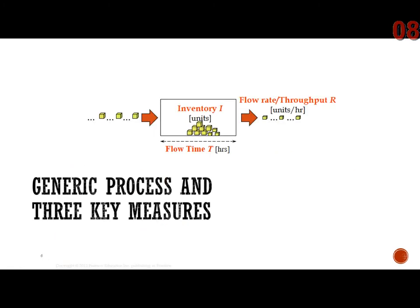Visually, there's one big rectangle around the entire process. The red arrows represent throughput coming in and going out. We're going to talk about a stable process today — Little's Law applies when throughput in and out is balanced. Inventory is the number of units inside that process at a snapshot. For example, taking a snapshot of this classroom right now, I count eight students — that's the inventory. Flow time is from when you enter the classroom until you exit.